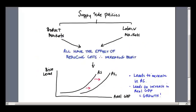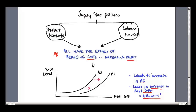If we just move on and summarize what we've talked about, looking at this next graph: supply-side policies impact on product markets and labour markets. The ultimate effect of both is to reduce costs and increase profit, which leads to a shift in aggregate supply to the right. That leads to an increase in aggregate supply, which clearly leads to an increase in GDP — and we know that means growth in the economy.